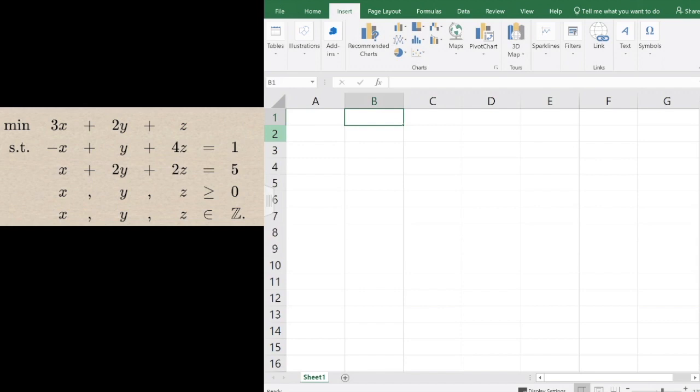Let's start setting this up. We have variables x, y, and z. The solution values will be right under. The objective is 3x plus 2y plus z.